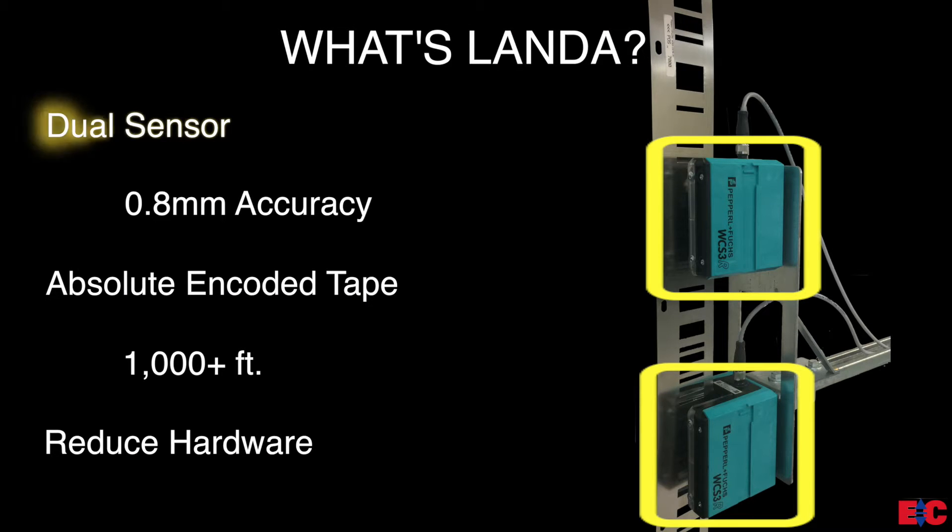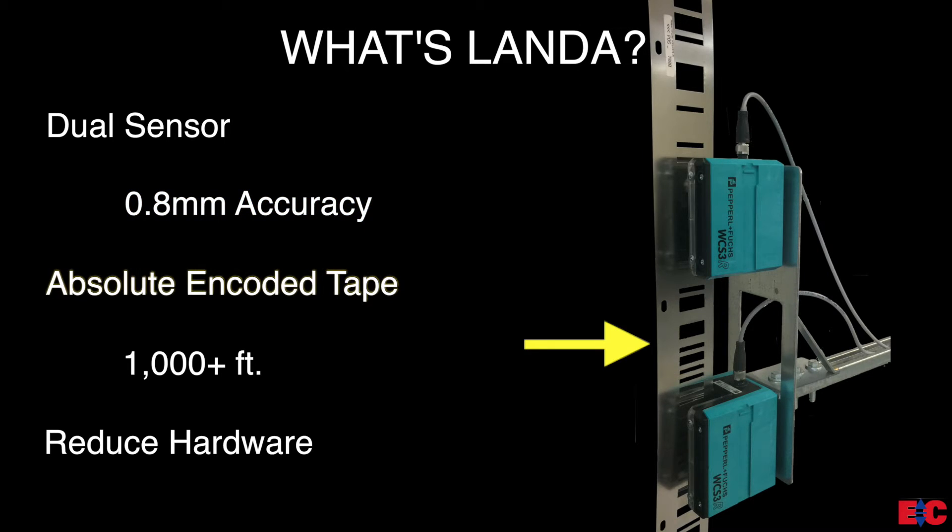Lambda is a dual tape reader system giving the Pixel controller system positional and speed redundancy verification. Each Lambda tape reader has an accuracy of 0.8mm. The stainless steel tape is an absolute encoded tape giving the Pixel controller system the ability to know exactly where it is at any given time. The tape can run for a thousand plus feet in length and because of this absolute encoded system, the Pixel controller system is able to reduce physical hardware in the hoist way.